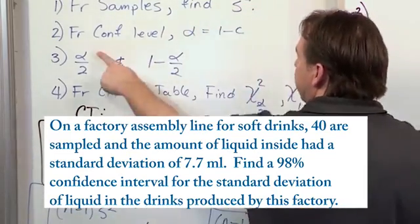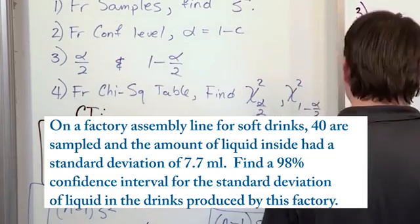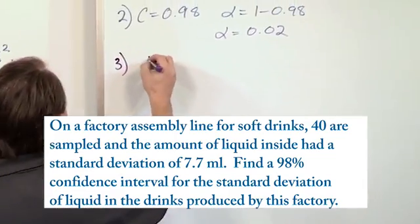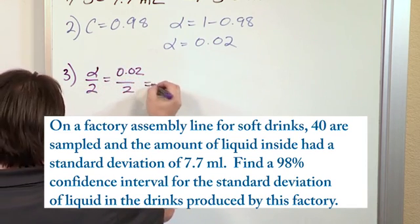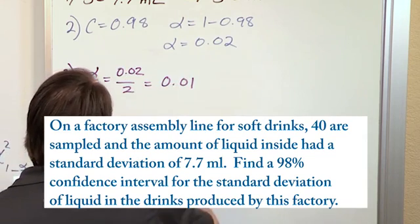Now for step three, it says find these values, alpha over 2, 1 minus alpha over 2. And that's very simple because alpha over 2 is 0.02 over 2, which is 0.01. So we have that.